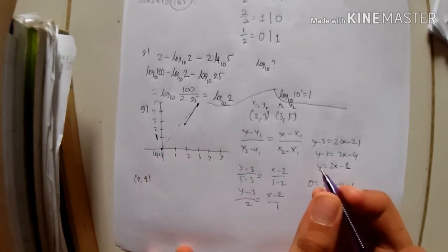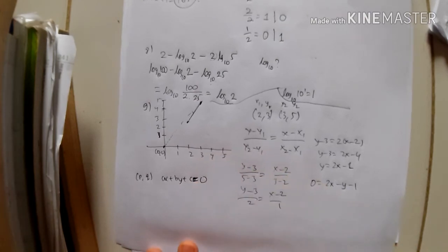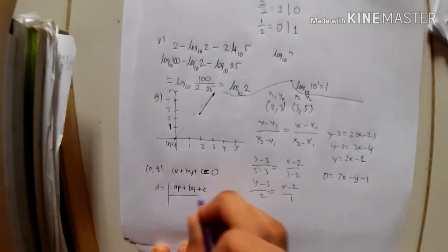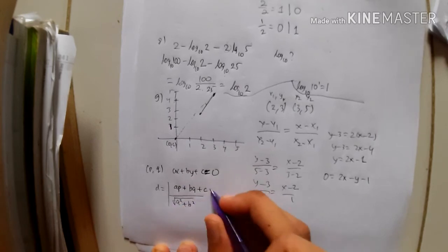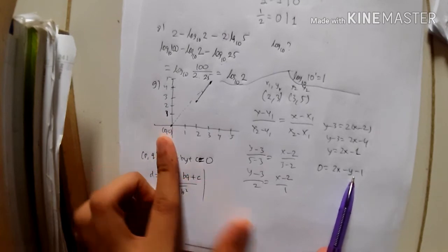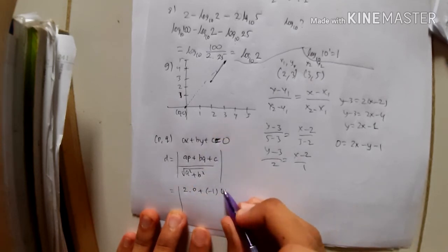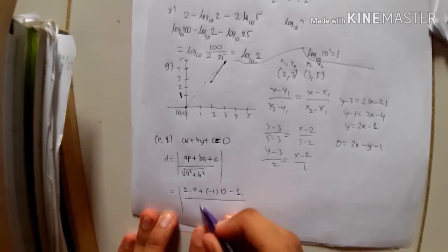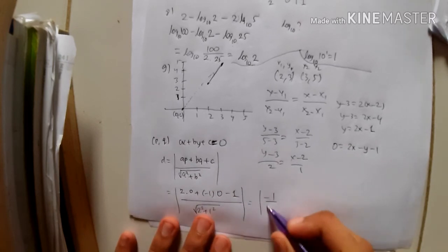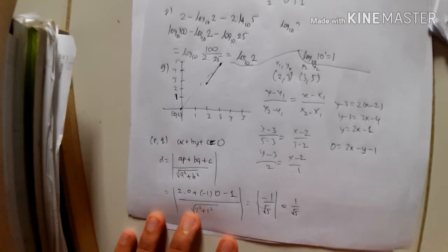The shortest distance from a point (P, Q) to a line ax + by + c = 0 is |aP + bQ + c| / √(a² + b²). Here a = 2, b = -1, c = -1, and the point is (0, 0). Distance = |2(0) + (-1)(0) + (-1)| / √(4 + 1) = |-1| / √5 = 1/√5. Since distance is always positive, the answer is 1/√5.